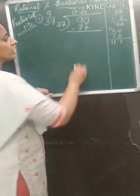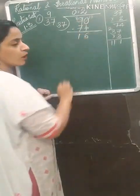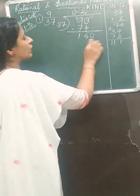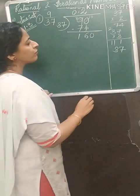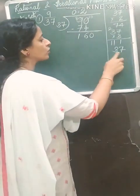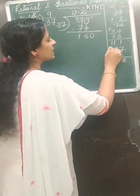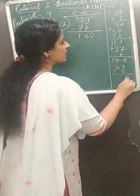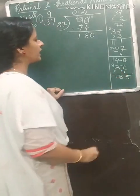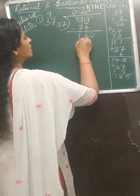Carefully do the subtraction. 90 minus 74: this will become 10 minus 4 is 6, and 8 minus 7 is 1, giving remainder 16. Now put a 0 to get 160. Find 37 in the table: try 4's — 7 fours are 28 carry 2, 3 fours are 12 plus 2 is 14, giving 148. Try 5's — that gives 185, too big. So we take 37 times 4 is 148.